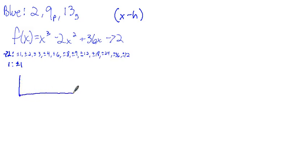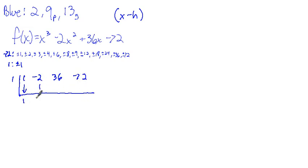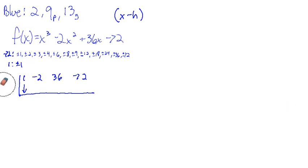So next, if we wanted to test whether one of these was a factor, we'd go to synthetic division — probably the fastest way to go. Let's say we wanted to guess that 1 is a zero, and we put our coefficients in. We bring down that 1, get 1, negative 1, negative 1, 35, 35 — that didn't work because we don't get a 0 at the end. So I'll just undo that and try 2 instead.